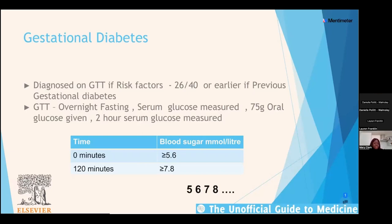Risk factors for gestational diabetes include: previous gestational diabetes, fetal macrosomia, first-degree relative with diabetes, BMI greater than 35, Afro-Caribbean or Asian ethnicity, and persistent glycosuria on urinalysis — either strongly positive on one occasion or lightly positive on multiple occasions. These would prompt a glucose tolerance test.